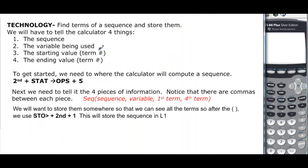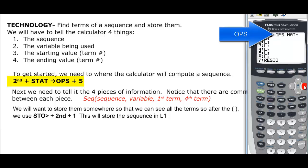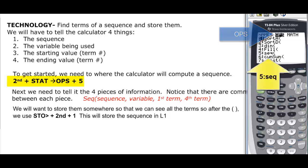Now we want to turn to our technology and see if it can do some of these things for us. We're going to have to tell it 4 things: what the actual sequence is, what variable we're using (we'll use x), the starting term number, and the last term number we end with — it's not the value, it's the term number. To get started, we need our calculator. We're going to compute the sequence: press Second, then Stat, arrow over to OPS, and at number 5 we see Sequence, which is exactly what we want.